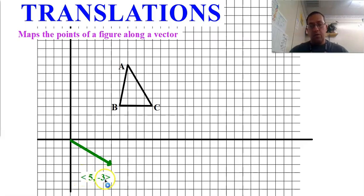Notice, however, unlike an ordered pair, it has these angled brackets. It does not have parentheses. Again, that's to show that it's a vector, not an ordered pair.